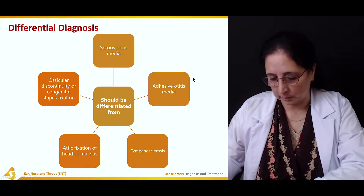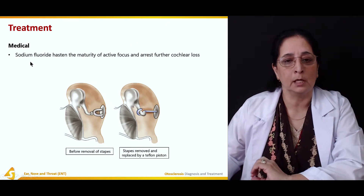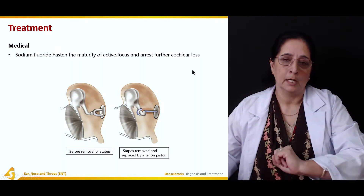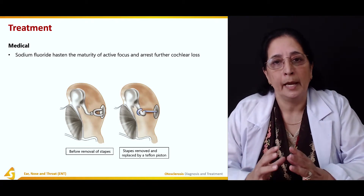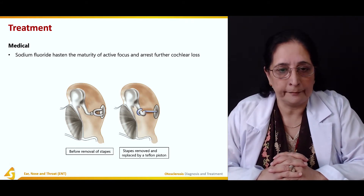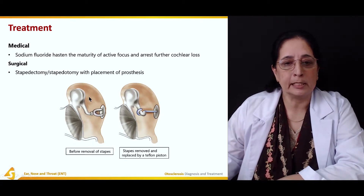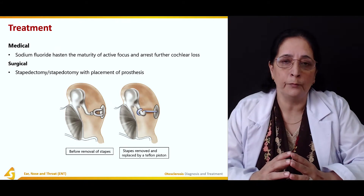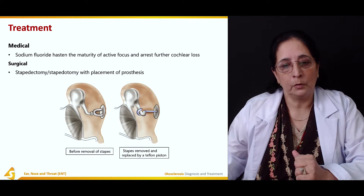These are the differential diagnoses of otosclerosis. Treatment can be medical, which includes sodium fluoride to hasten the maturity of the active focus and arrest further cochlear loss. Sodium fluoride slows down the progress of otosclerosis and can slow down damage to the cochlea and sensorineural deafness. The surgical treatment is by stapedectomy or stapedotomy with placement of a prosthesis. Because there is fixation of the stapes causing the problem, removal of the stapes is performed.